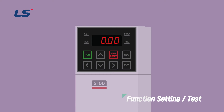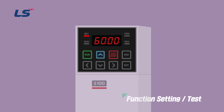Now let's see how to edit parameters using the keypad. The target frequency can be set on the keypad main screen by pressing enter and the up, down, left, right arrow keys. First, let's set the target frequency to 60 Hz.